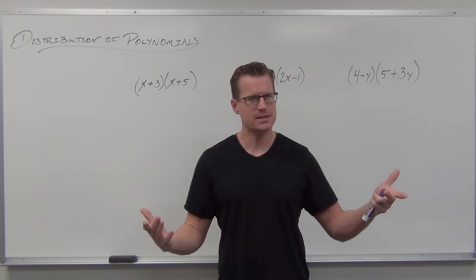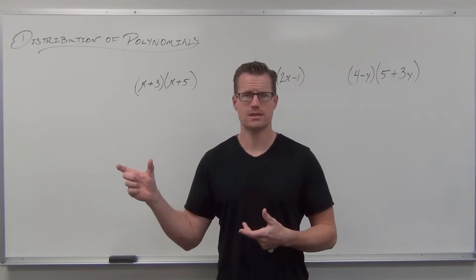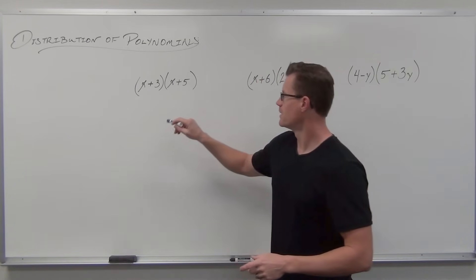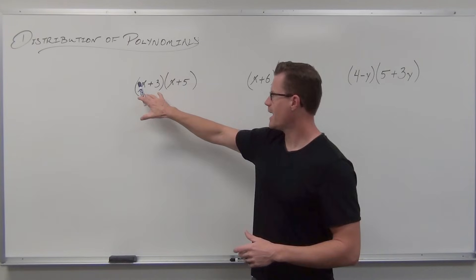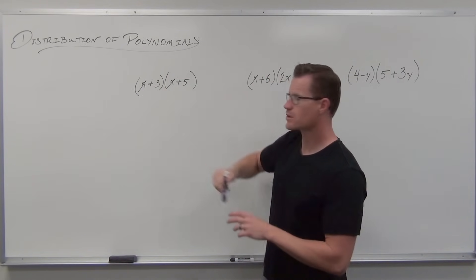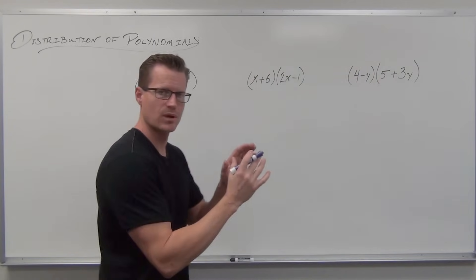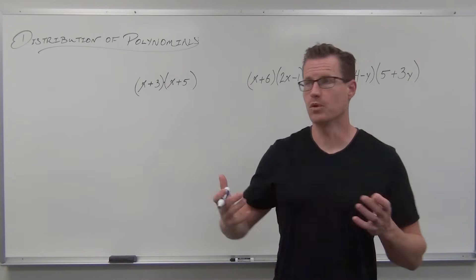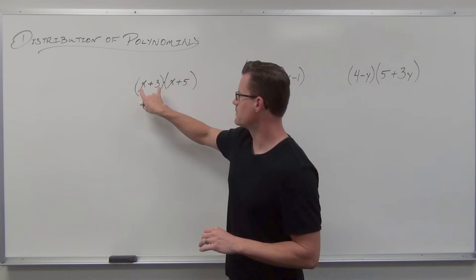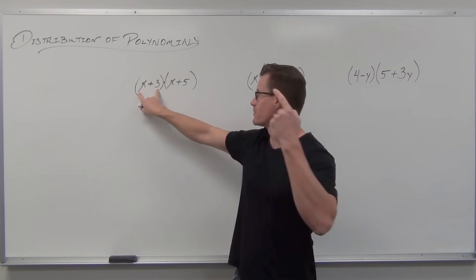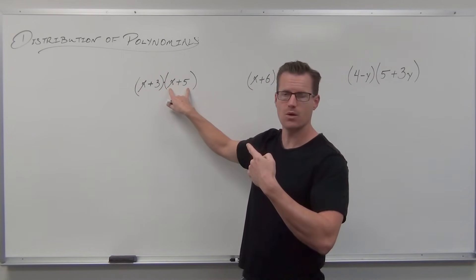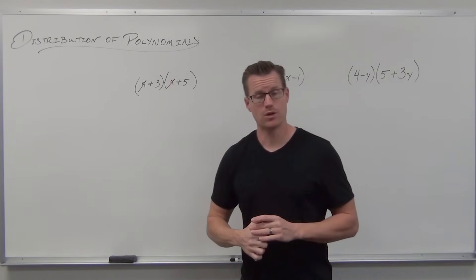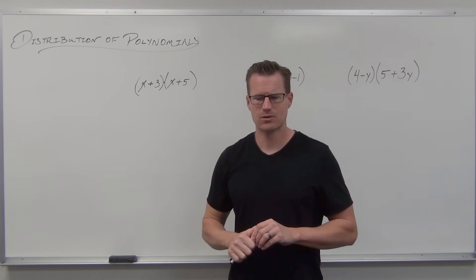Now we have really the same idea, it's just we have more than one single term — more than one little loner guy out front. We've got a couple of them. So if we have two terms times two terms, we can tell it's multiplication — any time parentheses are next to parentheses, we have multiplication. You've probably seen or learned this acronym called FOIL: First, Outside, Inside, Last.